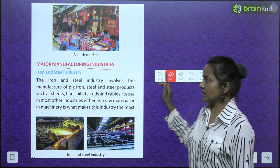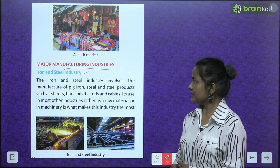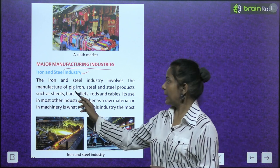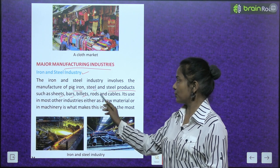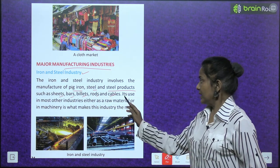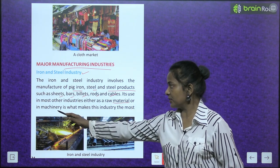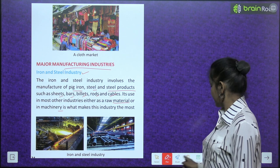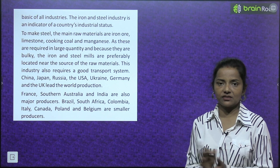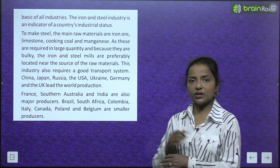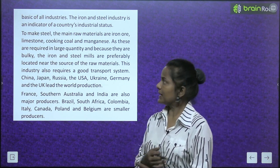Now major manufacturing industries. Iron and steel industry: the iron and steel industry involves the manufacture of pig iron, steel and steel products such as sheets, bars, billets, rods and cables. Its use in most other industries either as a raw material or in machinery makes this industry the most basic of all industries.